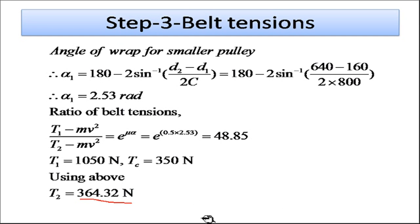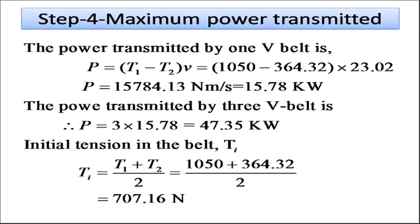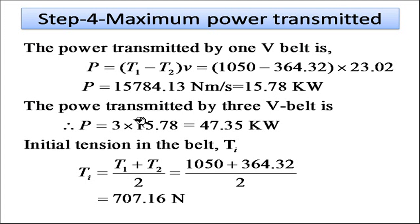With T1, T2, and Tc known, we calculate the maximum power transmitted by one belt: P = (T1 − T2) × v = (1050 − 364.32) × 23.02 = 15.78 kilowatt. The total power transmitted by all three V-belts is 3 × 15.78 = 47.35 kilowatt.